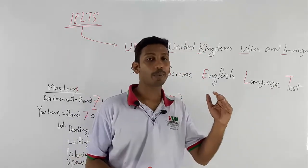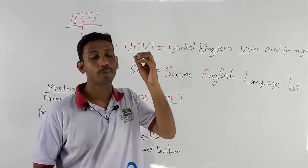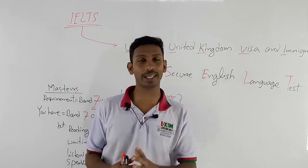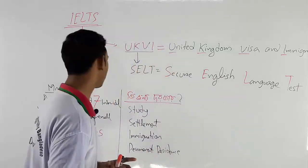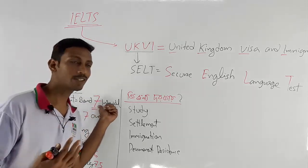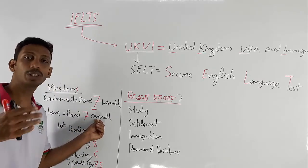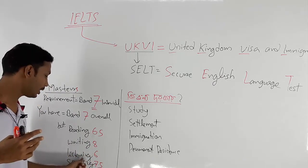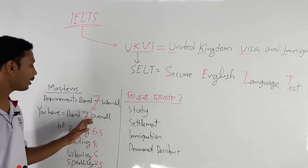When applying for a master's program in the UK, you also need a band 7 overall. For example, if your listening score is 6 and your speaking is 7.5, your overall band score would be 7. So for the UK, you need to meet that overall band 7 requirement and you need to study accordingly.